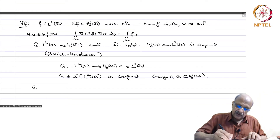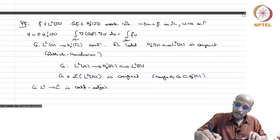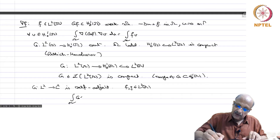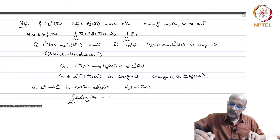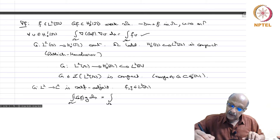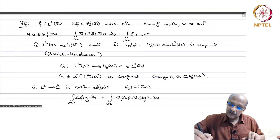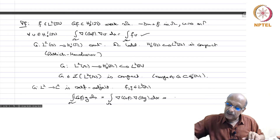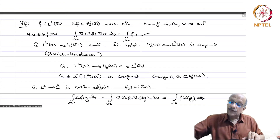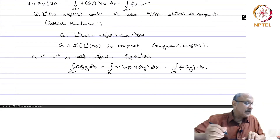G from L² to L² is self-adjoint. Indeed, if f and g are in L²(omega), then the integral over omega of G(f) times g dx equals the integral over omega of grad G(f) dot grad G(g) dx — using G(g) as a test function and G(f) as the solution — which in turn equals the integral over omega of f times G(g) dx. So the mapping is symmetric and, being real, it is self-adjoint.